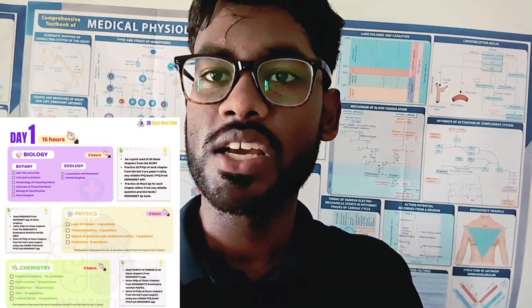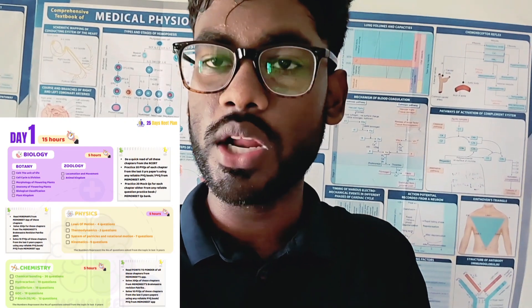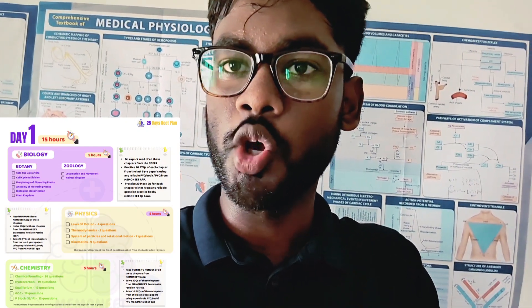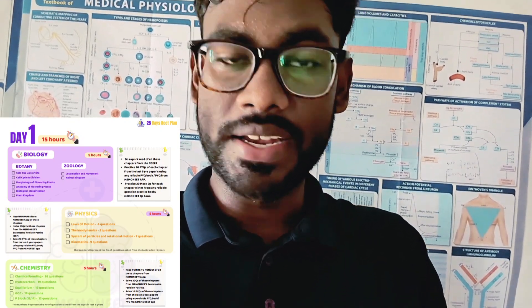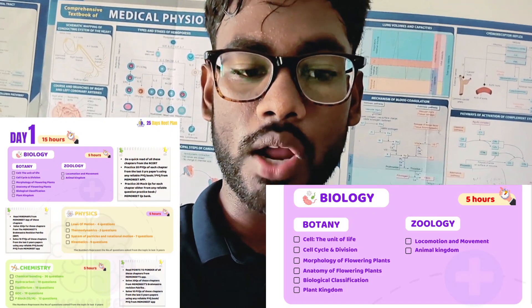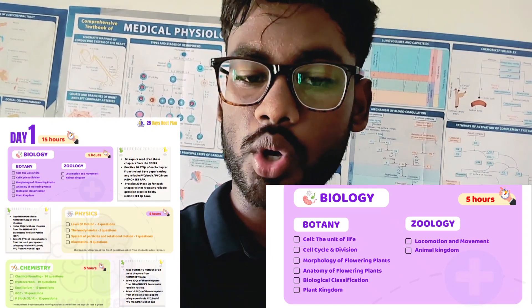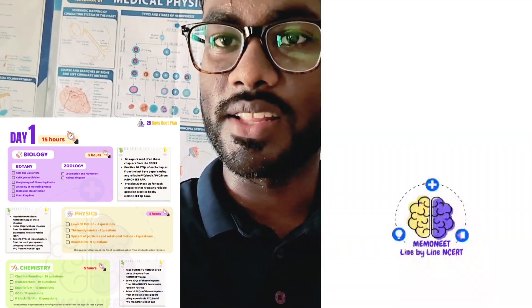How do you follow this plan? Let me explain Day 1. Day 1 is a 15-hour challenge — 5 hours for biology, 5 hours for physics, and 5 hours for chemistry. On Day 1, there are 8 chapters for biology: Cell Unit of Life, Cell Cycle, Cell Division, Morphology of Flowering Plant, Anatomy of Flowering Plant, Biological Classification, Plant Kingdom, and Locomotion and Animal Kingdom.